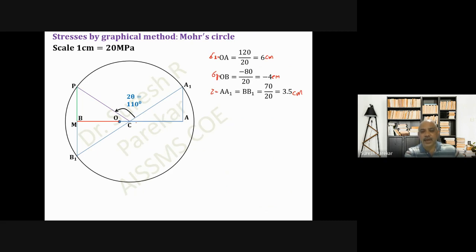Now this plotting is over, and we have to measure the things one by one. First we have OM, and OM we have -4 centimeters, so -4 × 20 = -80 MPa. There we got -76-point-something MPa, so close. Then we have PM, 3.4 centimeters, so 3.4 × 20 = 68 MPa. Analytically we have 70 MPa.